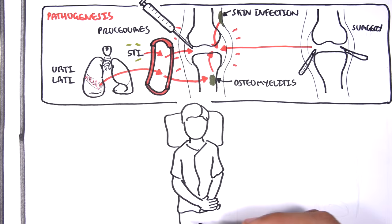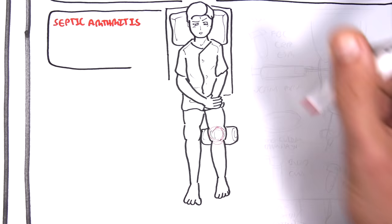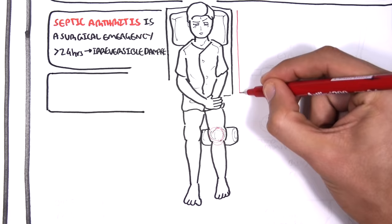Again, with any monoarthritic presentation, it's important to rule out septic arthritis. It is a surgical emergency, with greater than 24 hours leading to irreversible joint damage.